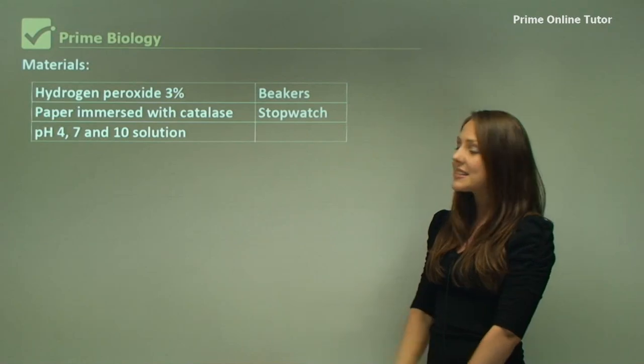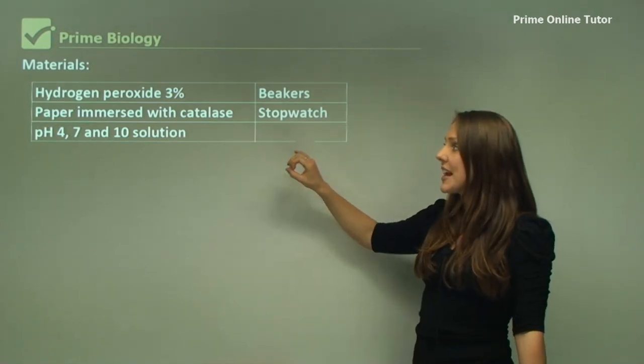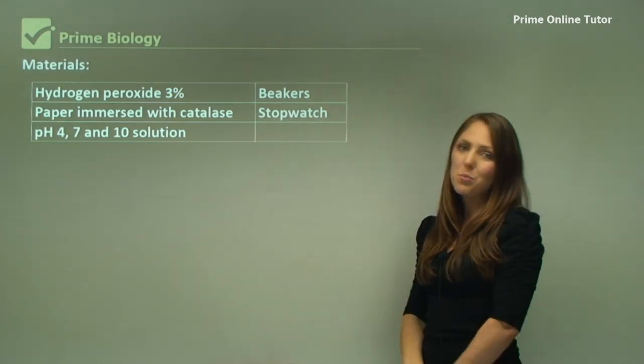The paper immersed with catalase, you need pH 4, 7, and 10 solution, beakers, and a stopwatch.